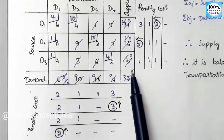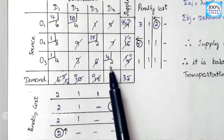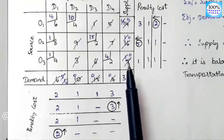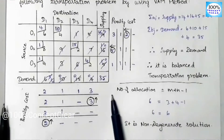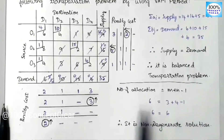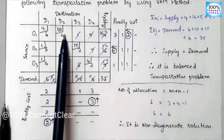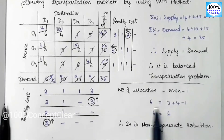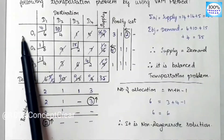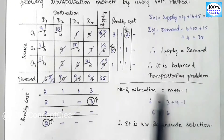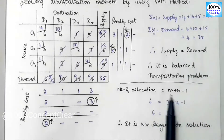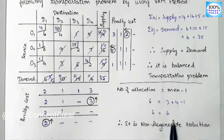We have completed all allocations. Now we check whether the solution is degenerate or non-degenerate. Number of allocations = 6. m+n−1 = 3+4−1 = 6. Since number of allocations equals m+n−1, this is a non-degenerate solution.